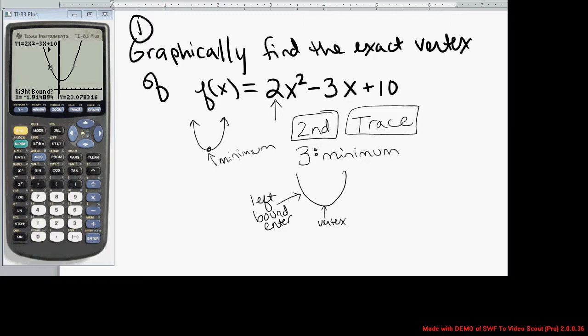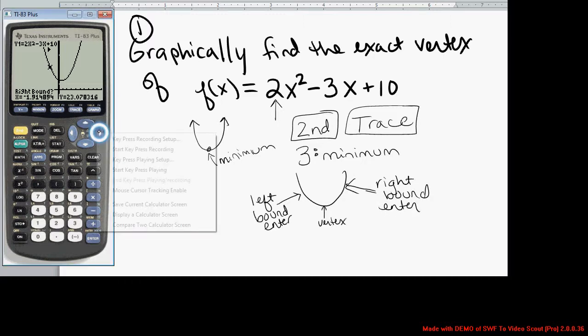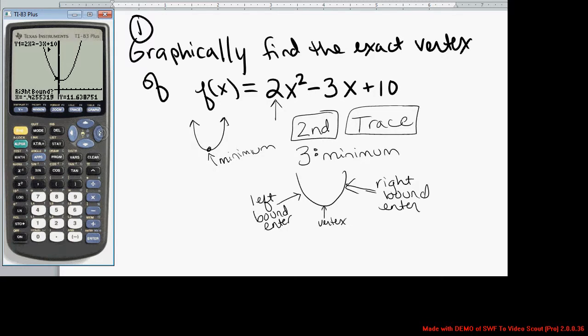Notice then, at the bottom of the screen, the calculator is now asking for a right bound. It wants me to move my cursor to the right side of that vertex and press enter. So I hit the right arrow until my cursor moves to the right side of the vertex. I'm creating a little vertex sandwich. If you notice on the calculator, there's two little arrows pointed at each other, and inside of those arrows is the vertex. You made a little vertex sandwich.